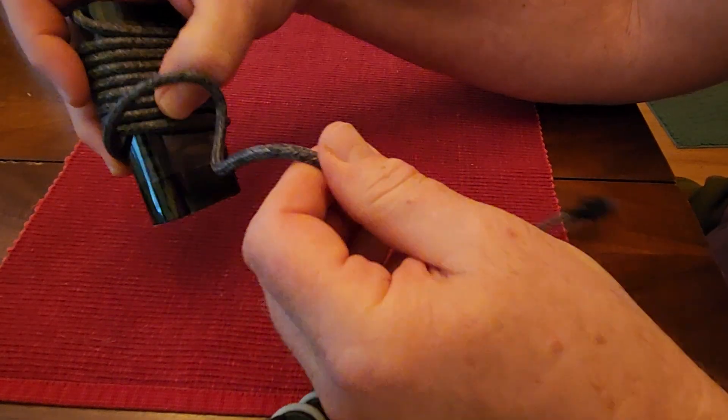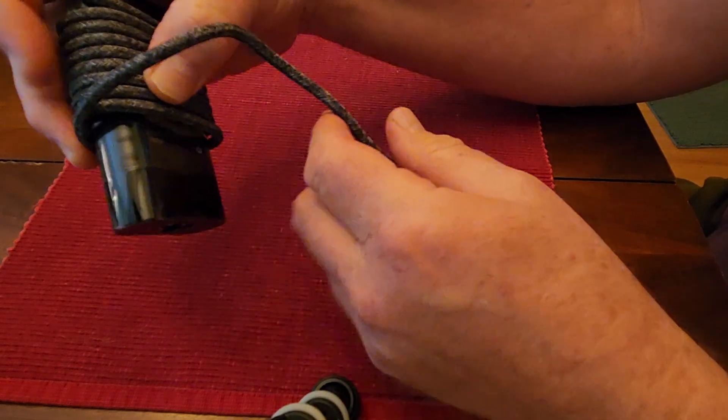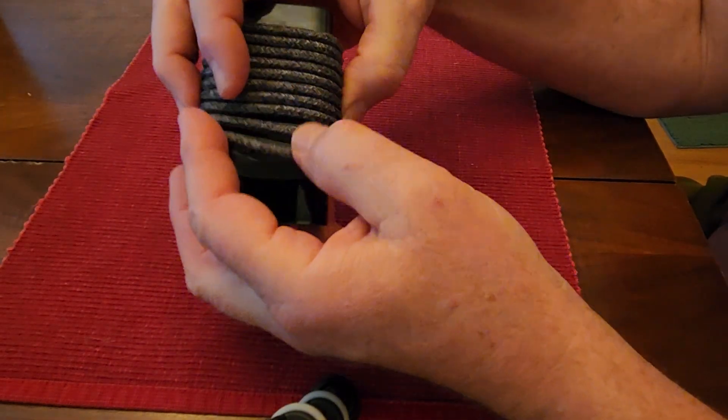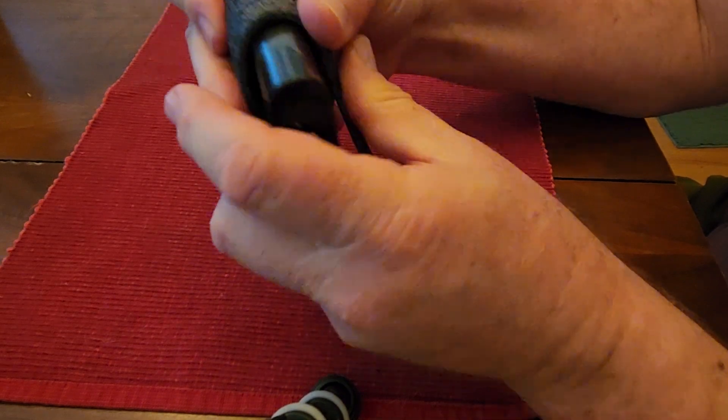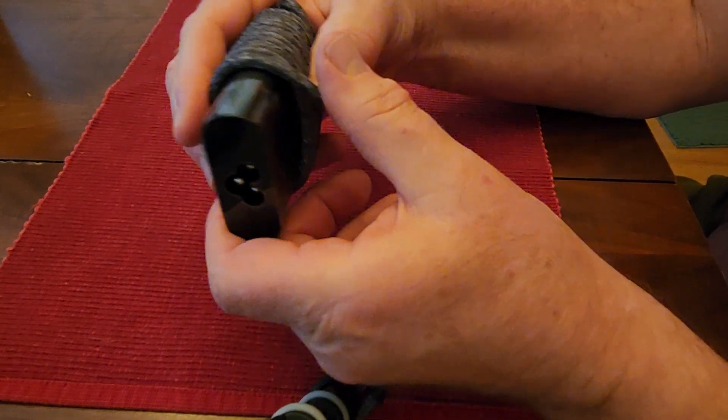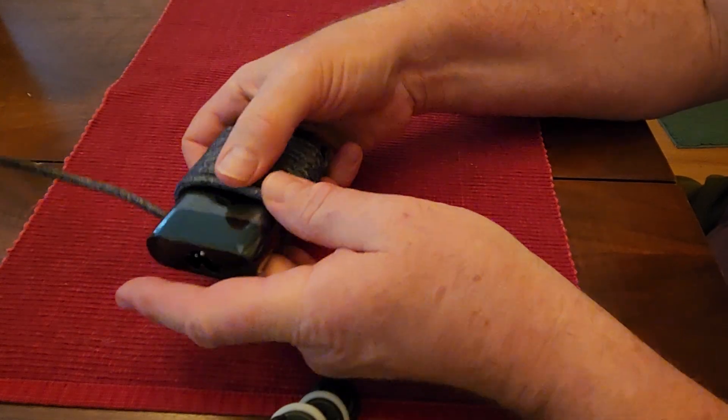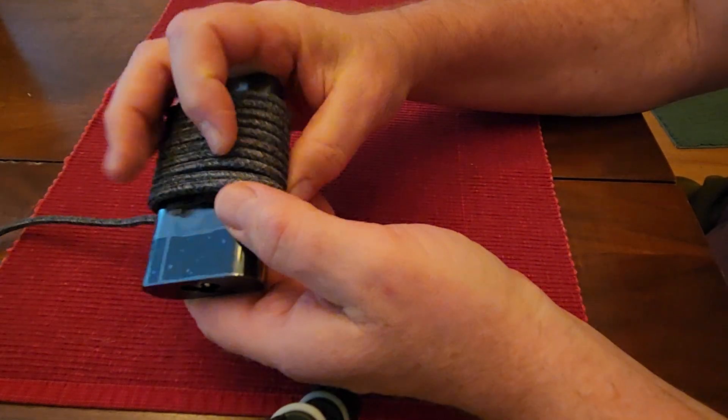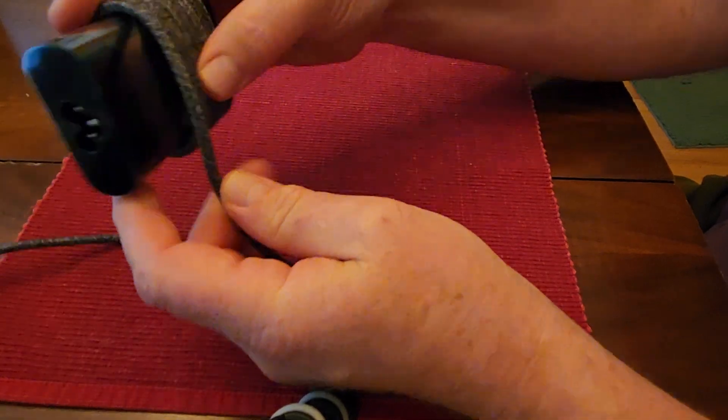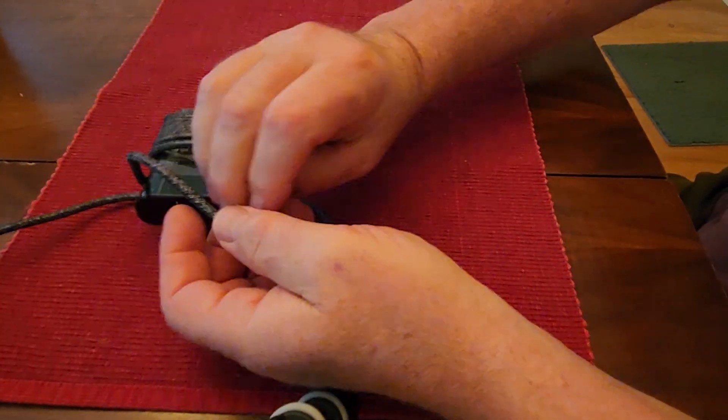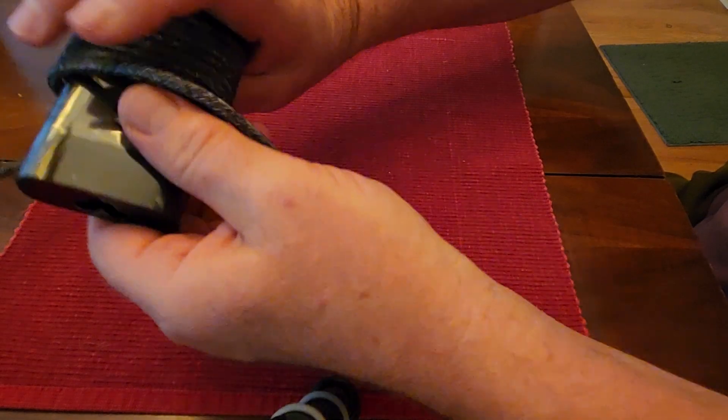So whenever you have anything rolled up—a wire, copper tubing, anything like that—the way that you undo it is just like this. You want to unravel it, unwind it.